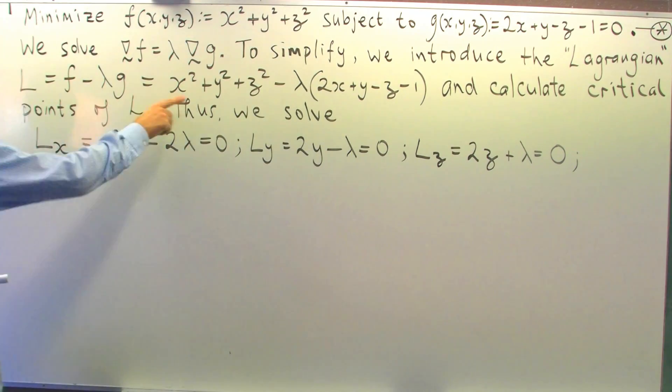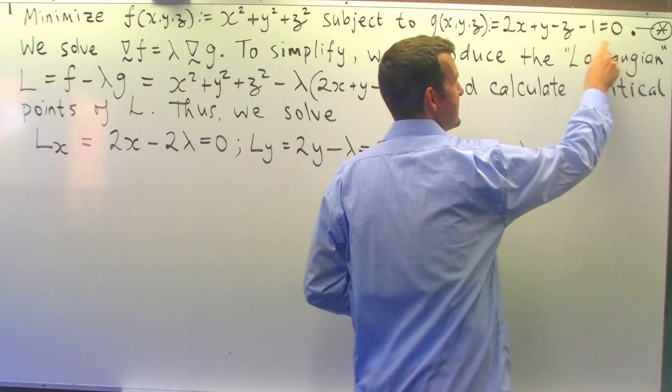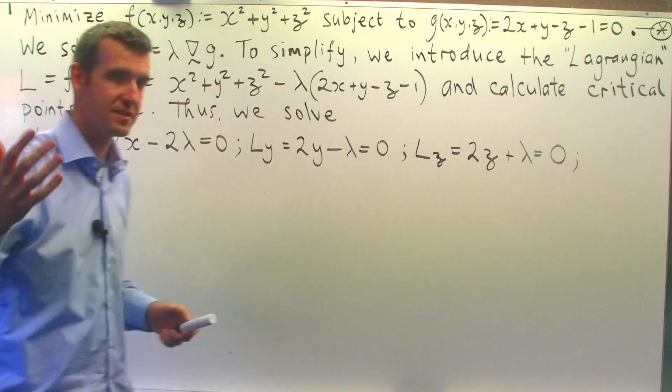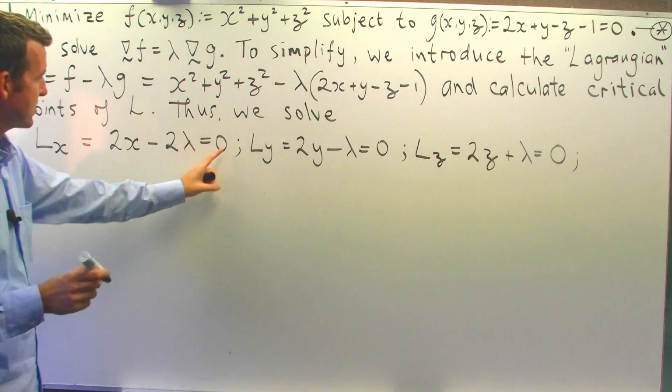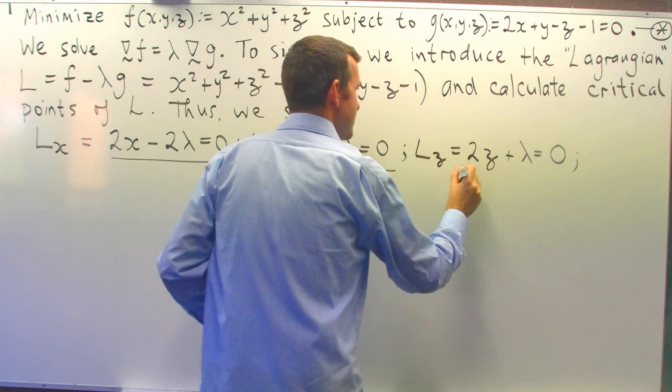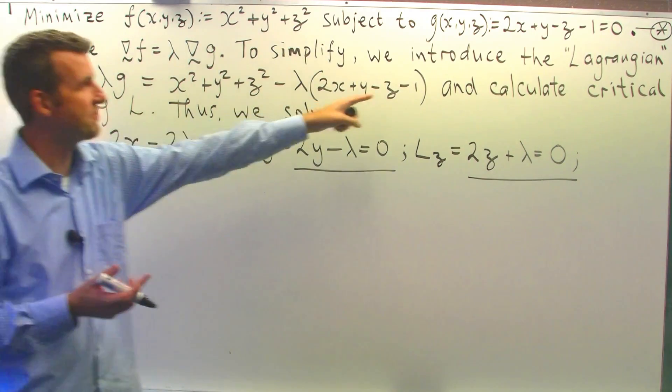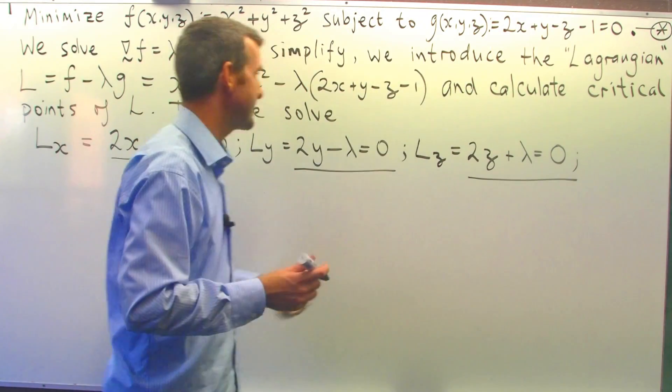Now you may think, well, hang on. There's a lambda here. It's a function of lambda. What happened to the dL/d lambda? Well, that's actually contained up here in the constraint. So we have three equations and we have four unknowns. However, let's not forget again about this constraint equation.